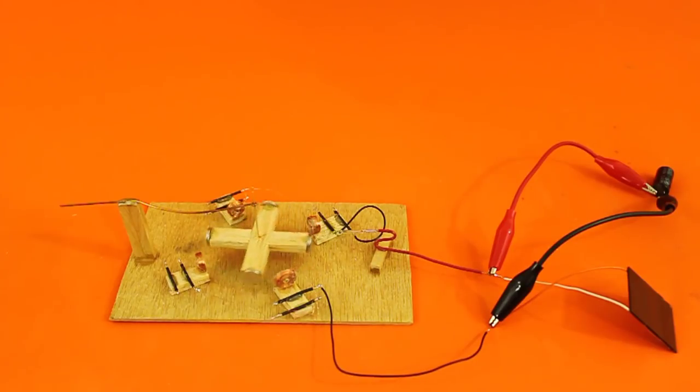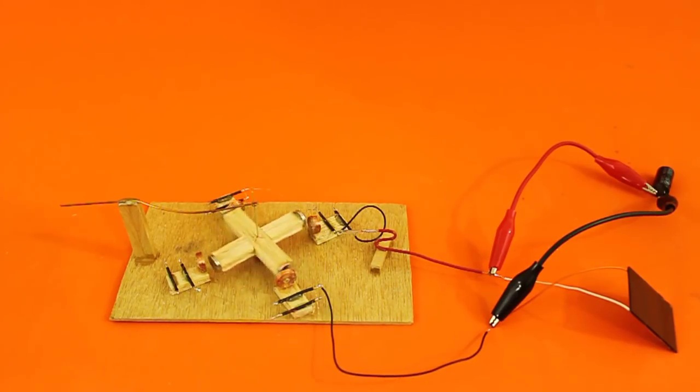Now the motor is running with the capacitor in parallel with the solar cell. Why does the motor now run and not run without the capacitor?